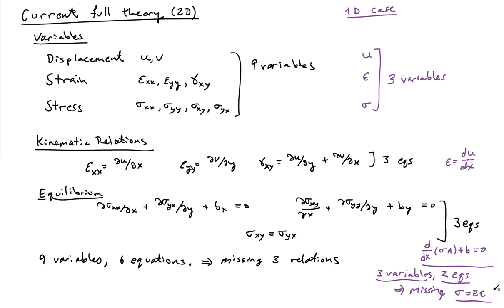So in the 2D case, there are going to be three constitutive equations that we have to specify. Now, if we were doing the 3D case, it turns out that there are 18 variables: three displacements, nine stresses, and six strains.